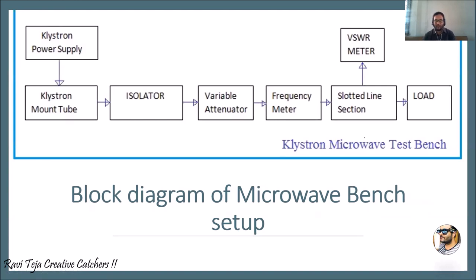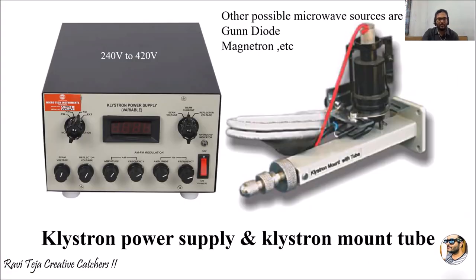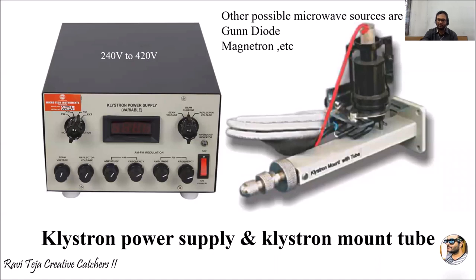The first blocks are the klystron power supply and the klystron mount tube. The klystron power supply can provide voltage from 240 to 420 volts and is used to power the klystron mount tube. The klystron mount tube — also called a microwave source, klystron amplifier, or klystron oscillator — generates the microwave signal. Other possible microwave sources include gun diode and magnetron.